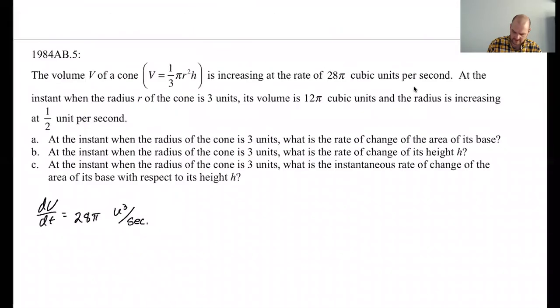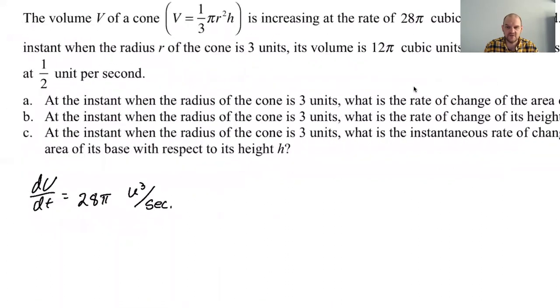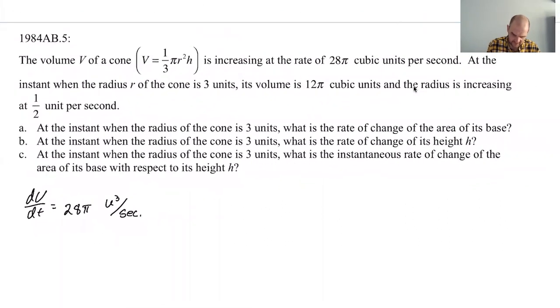At the instant when the radius r of the cone is three units, its volume is 12 pi cubic units. Okay, so there's a lot of information here. So when the radius is three, the volume is 12 and the radius is increasing one half unit per second. So that's only at the time when the radius is three. If you look at all the questions, they all are when the radius is three, when the radius is three, when the radius is three. So that's basically given information.